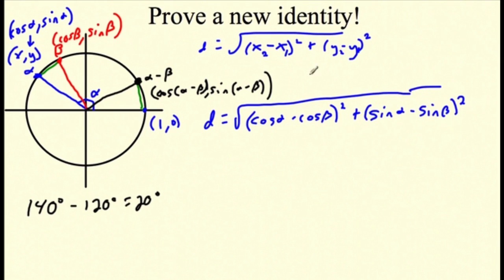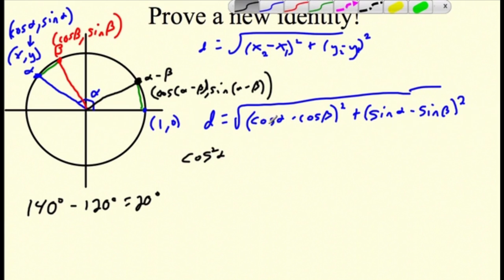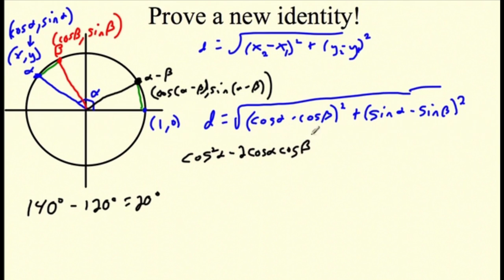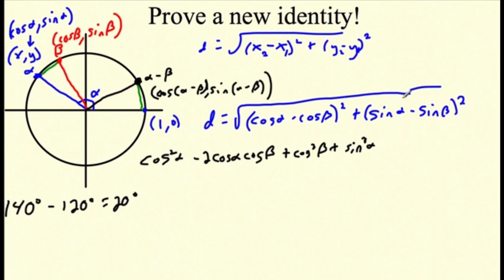We can simplify by FOILing this out. FOILing (cosine alpha minus cosine beta) squared gives cosine squared alpha minus 2·cosine(alpha)·cosine(beta) plus cosine squared beta. FOILing (sine alpha minus sine beta) squared gives sine squared alpha minus 2·sine(alpha)·sine(beta) plus sine squared beta.